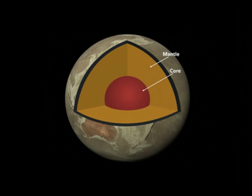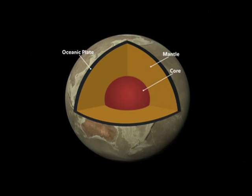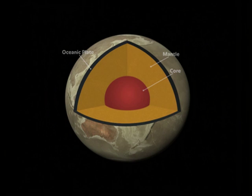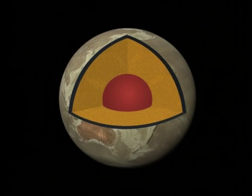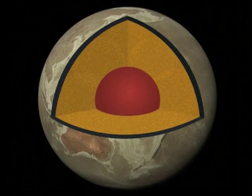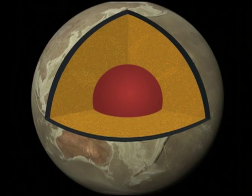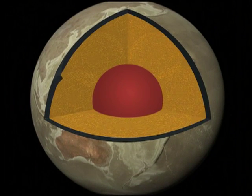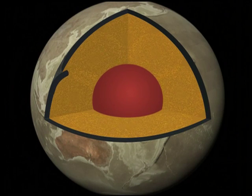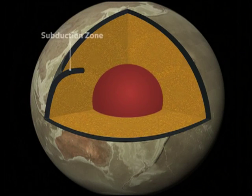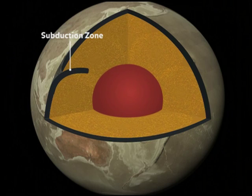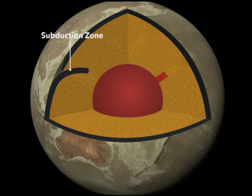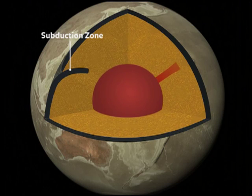The continents and the ocean floor are arranged in plates that sit on top of the mantle. Heat within the mantle causes it to flow in a process called convection, and this flow drives the movement of the plates above. The plates break apart at mid-ocean ridges and sink into the mantle at subduction zones. Hot mantle close to the core rises in columns to the surface, forming hot spots.